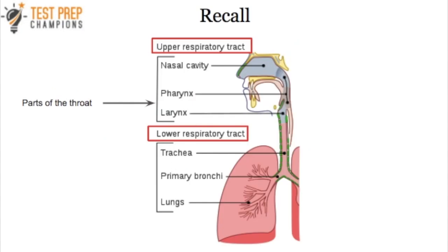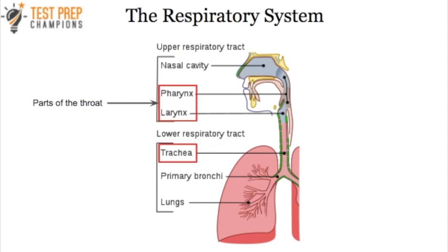Let's look at this in more depth. We can divide the respiratory system into the upper respiratory tract and the lower respiratory tract. The pharynx is part of both the digestive system and the respiratory system. The larynx is what we call the voice box and is involved in speech. The throat is part of the upper respiratory tract, and the trachea is part of the lower respiratory tract. Lower respiratory tract infections involve the airways below the larynx, while upper respiratory tract infections occur in the structures at the larynx or above.